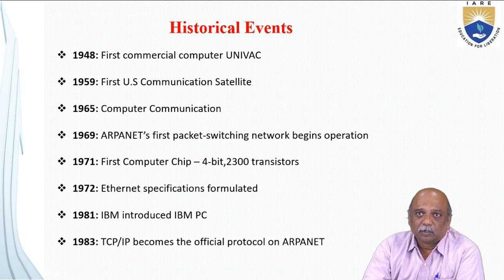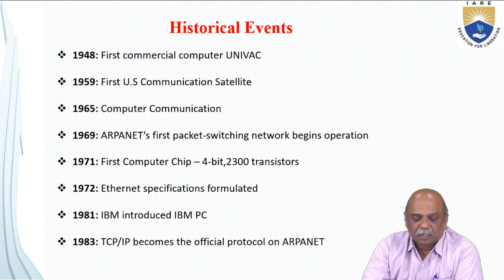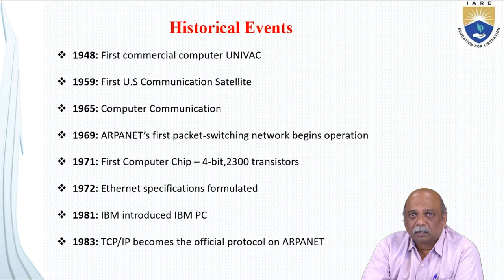Before going into the details of computer networks, we review some historical events. In 1948, the first commercial computer UNIVAC was developed. In 1959, the first US communication satellite was launched. In 1965, the idea of computer communication was introduced — Leonard Kleinrock, in his queuing model, defined a computer network where nodes are autonomous computers and links are telecommunication links, proposing this idea in 1965.